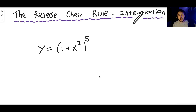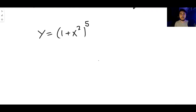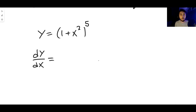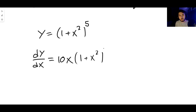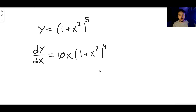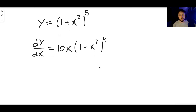Let's say that we wanted to differentiate it. If we differentiated this we would use the chain rule - your substitution would be u equals 1 plus x squared, you would then have y equals u to the 5, and it would end up being 10x times 1 plus x squared to the power of 4. This would be the derivative of the above function.